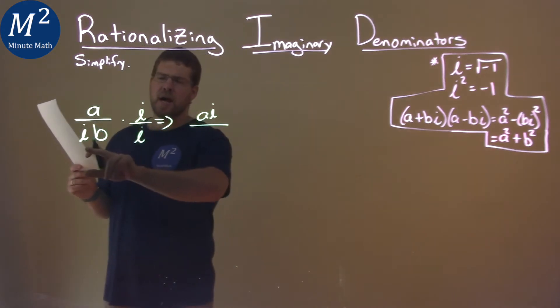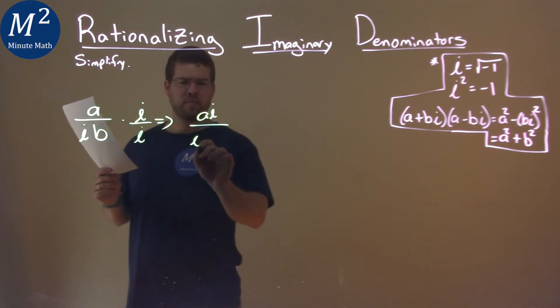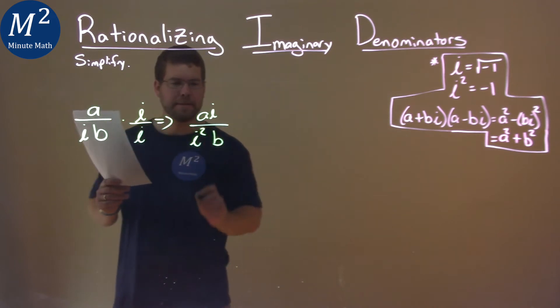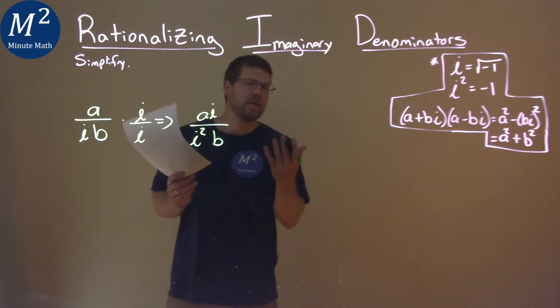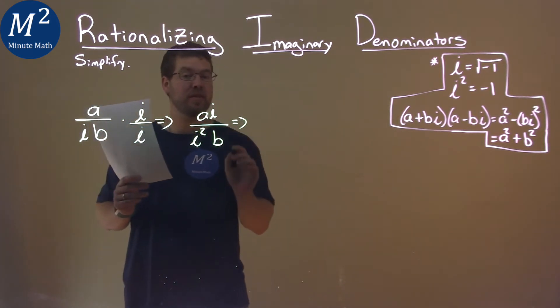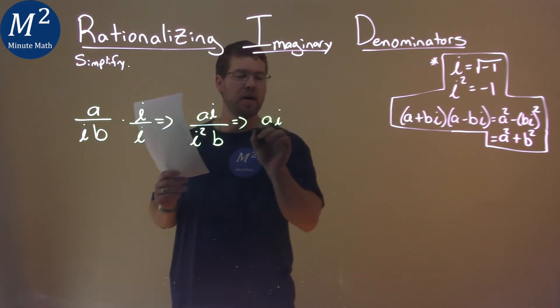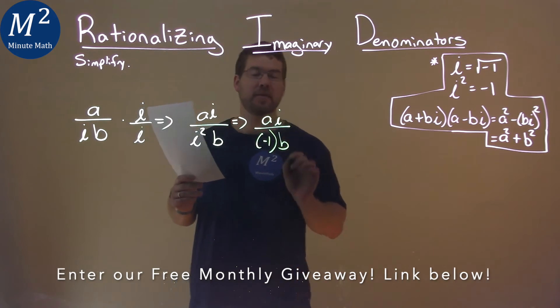And IB times I is I squared times B. What do we know about I squared? Well, I squared is negative 1. So we have AI over, well, I squared, negative 1 times B.